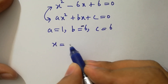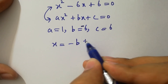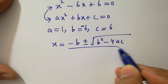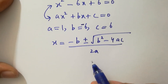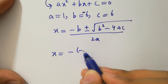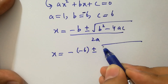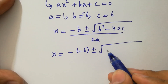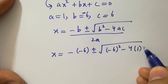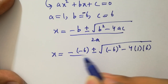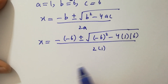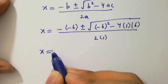Apply the quadratic formula: x equal to minus b plus or minus square root of (b squared minus 4ac) over 2a. Substituting: x equal to minus (minus 6) plus or minus square root of ((minus 6) squared minus 4 times 1 times 6) over 2 times 1.